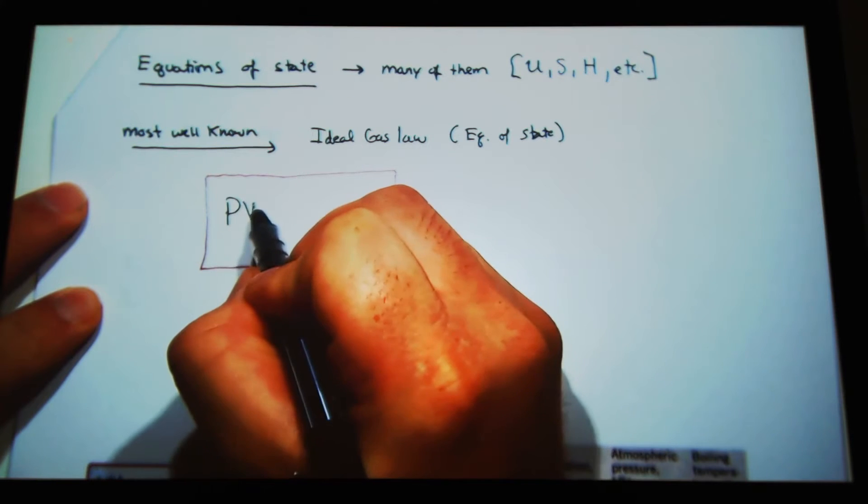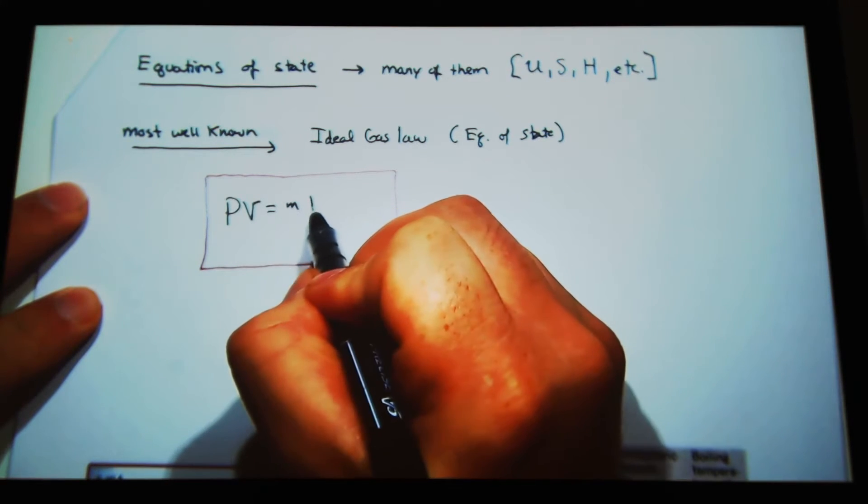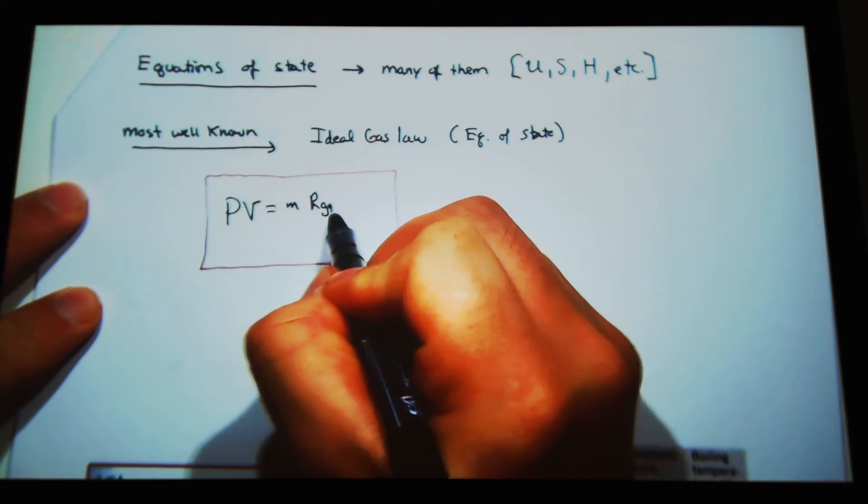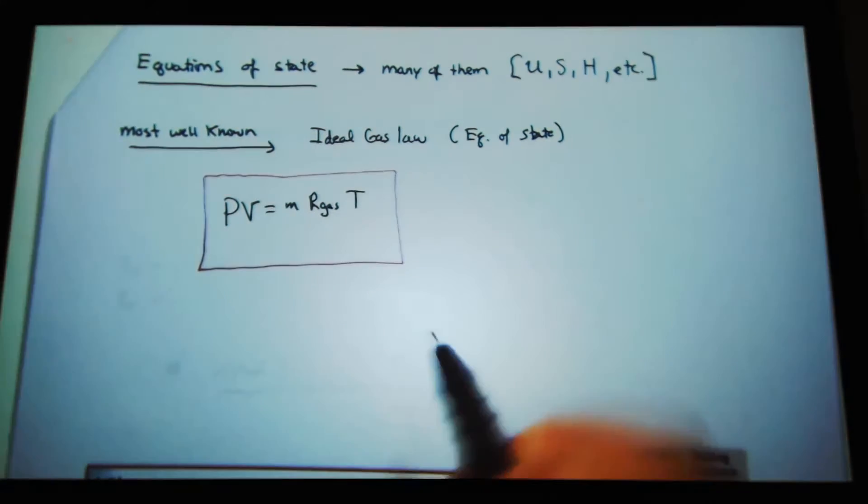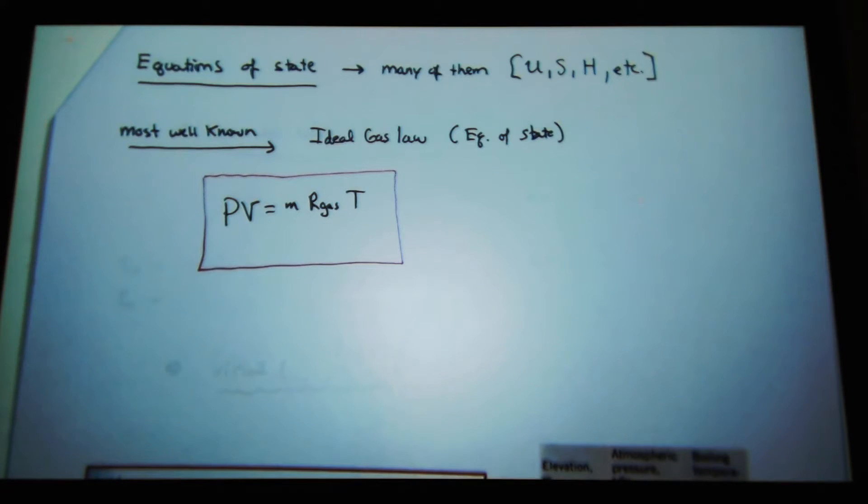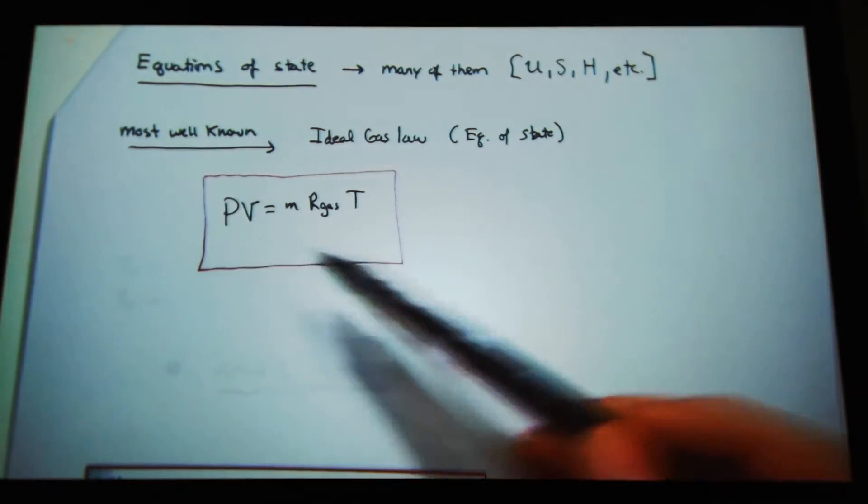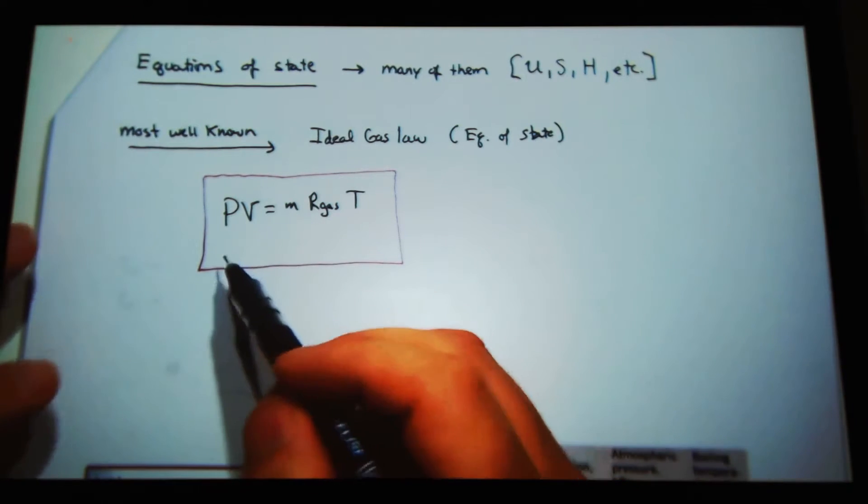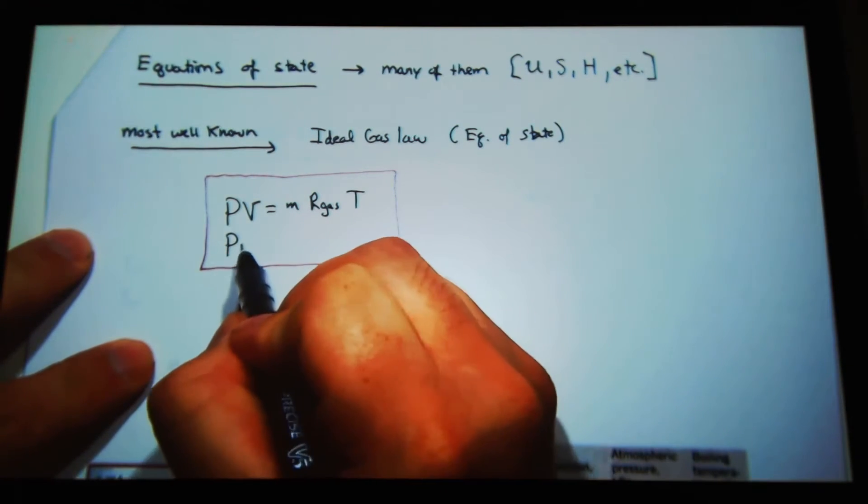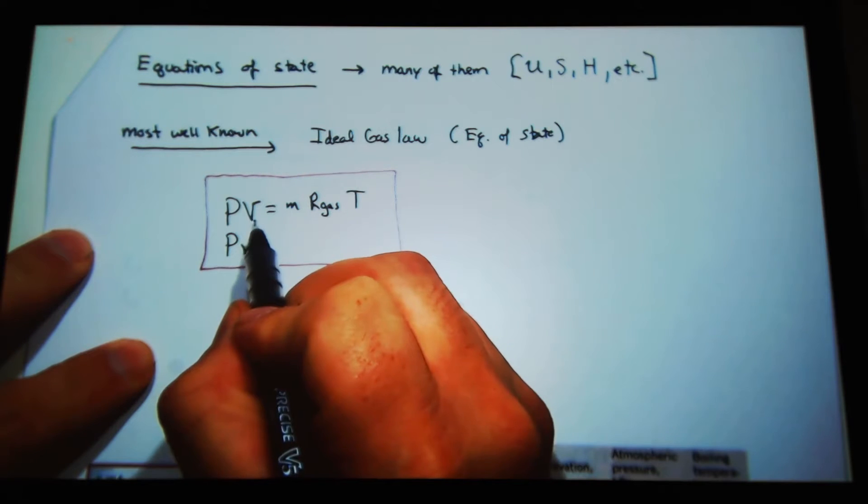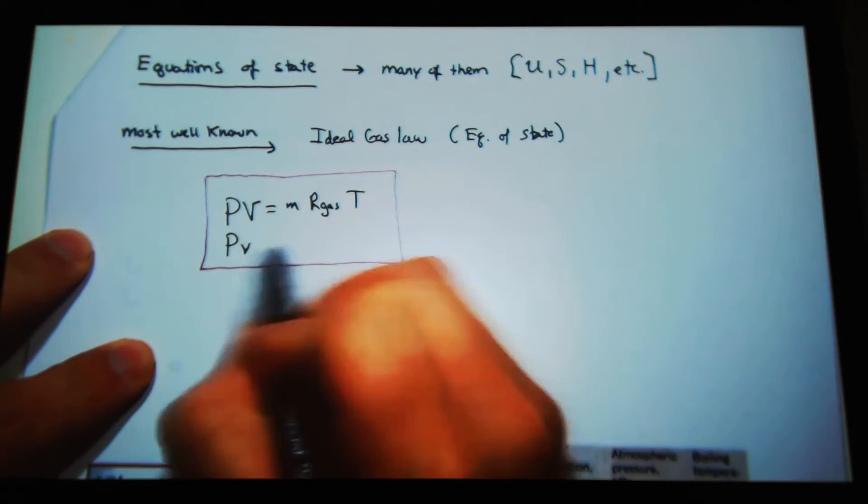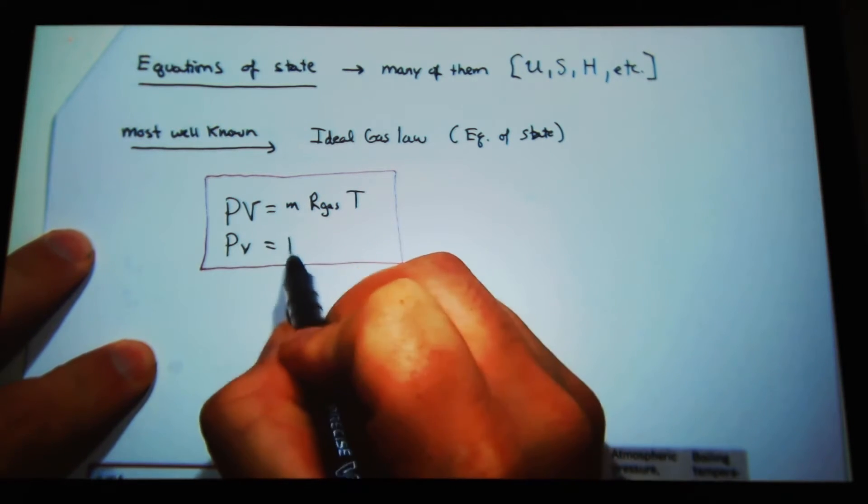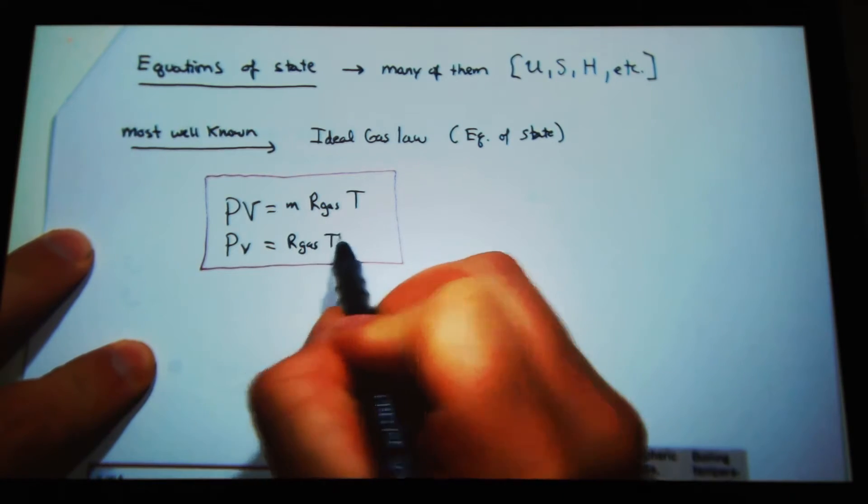PV equals M R_gas T. How can I say it's an equation of state? Because I have the temperature and pressure. Another way to write it is I can put it in small v, where I divide through by the mass, so I have specific volume, volume per unit mass, and then I have the gas constant times temperature.